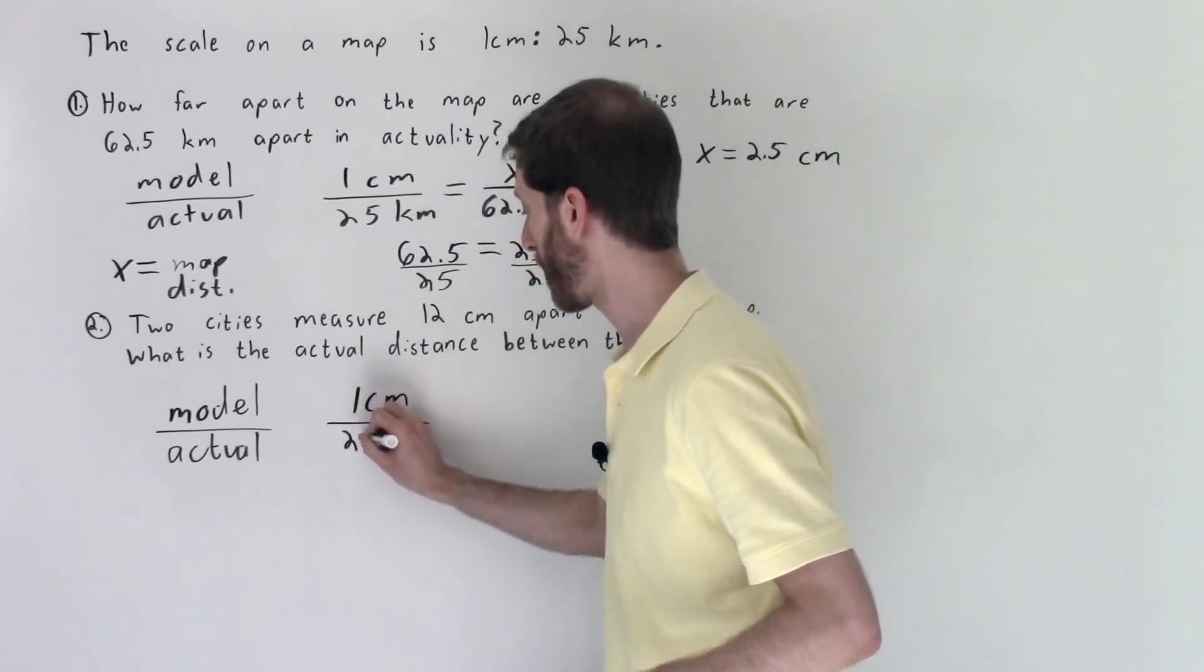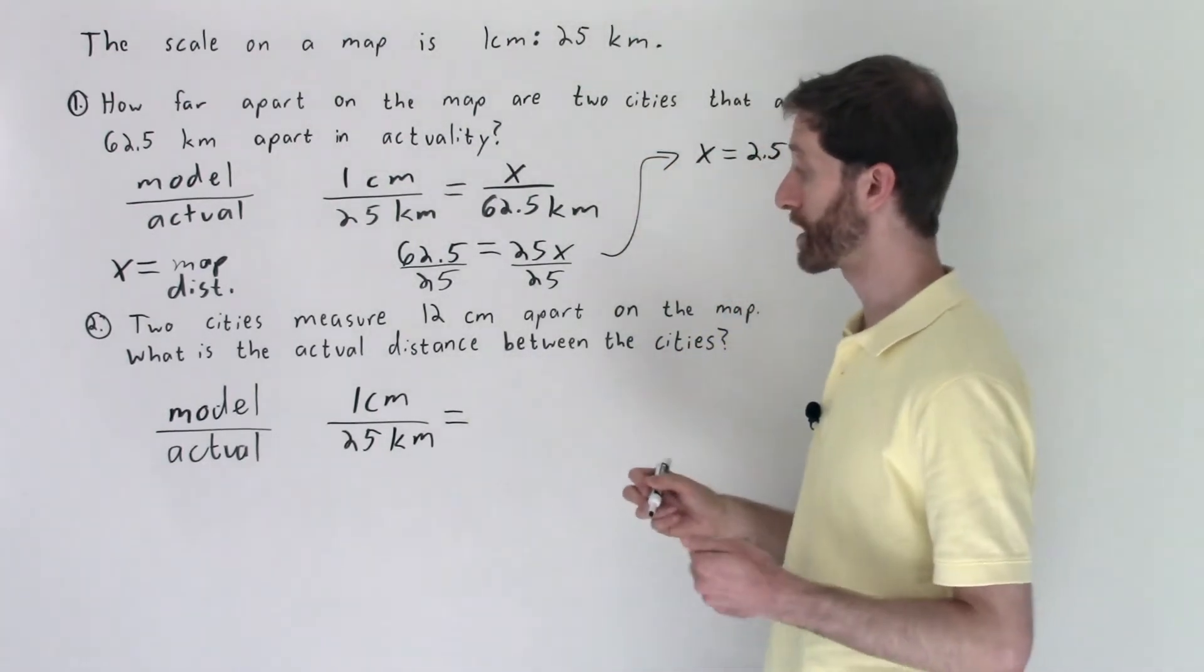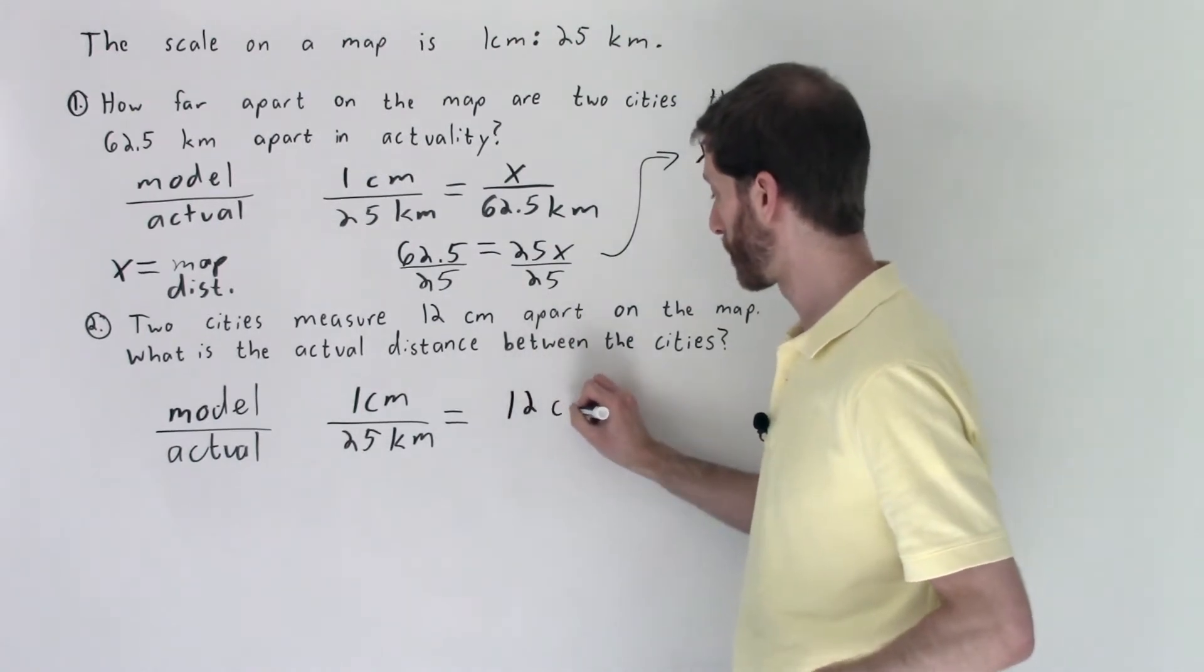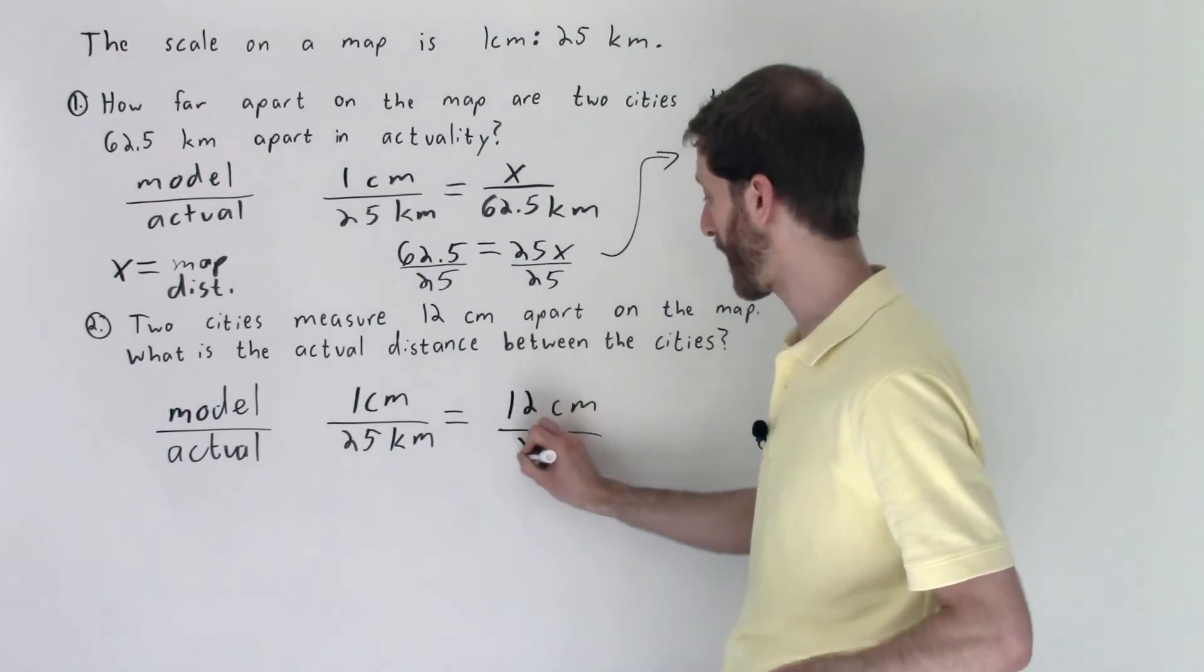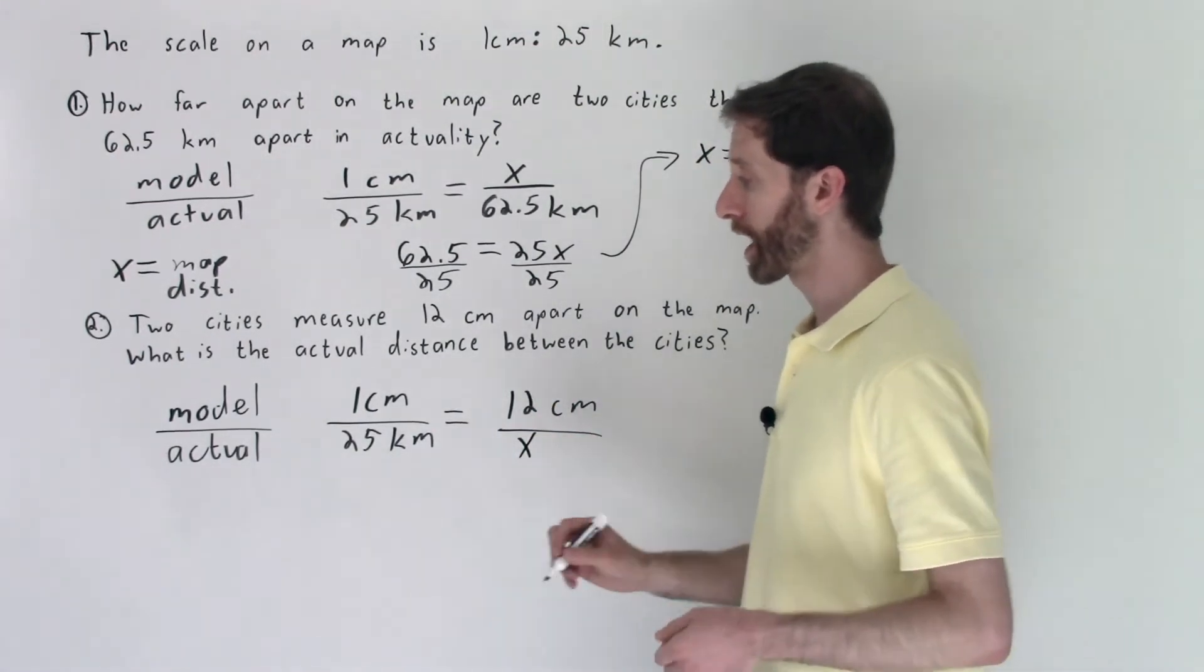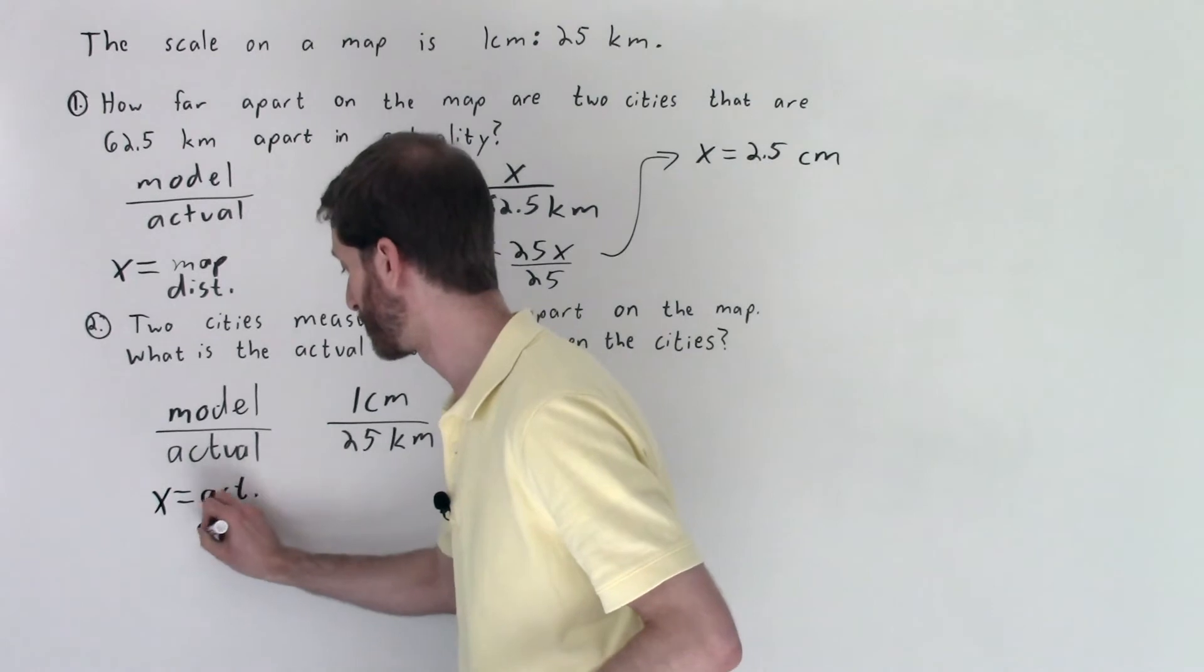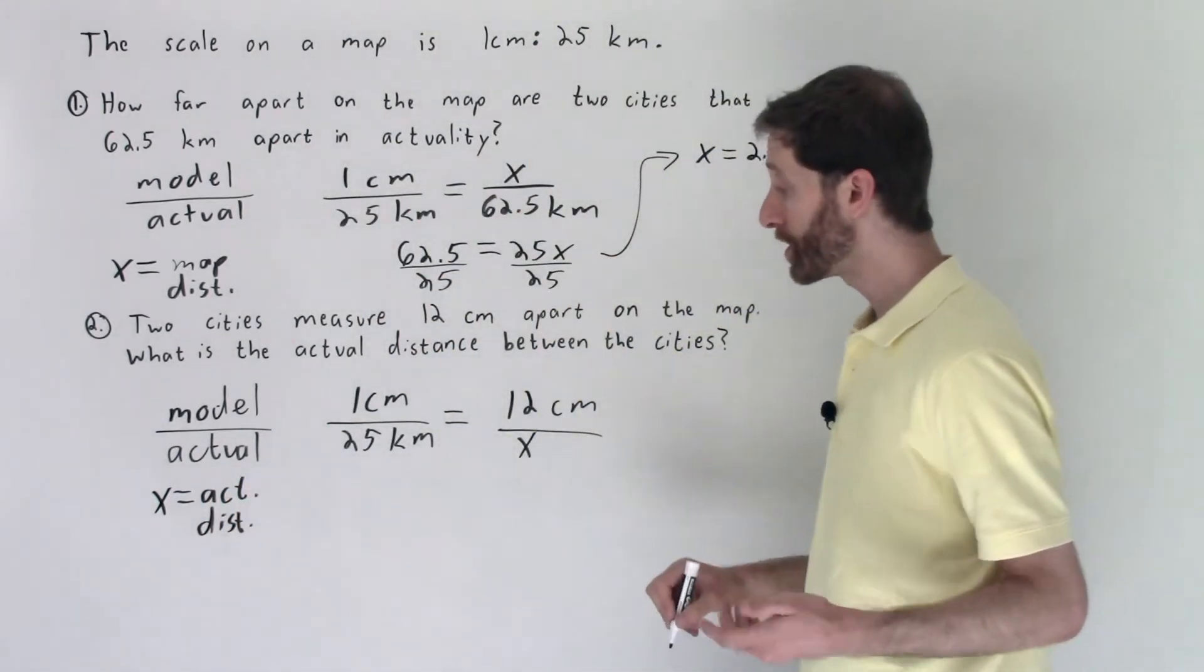With model to actual I still have one centimeter on the map to 25 kilometers in actuality. That rate will be equal to the rate of the map amount, which in this case we have is now 12 centimeters, compared to the actual amount which is what we want to find. So I'll call that x. That x would be in kilometers. Again we could define that, x equals the actual distance.